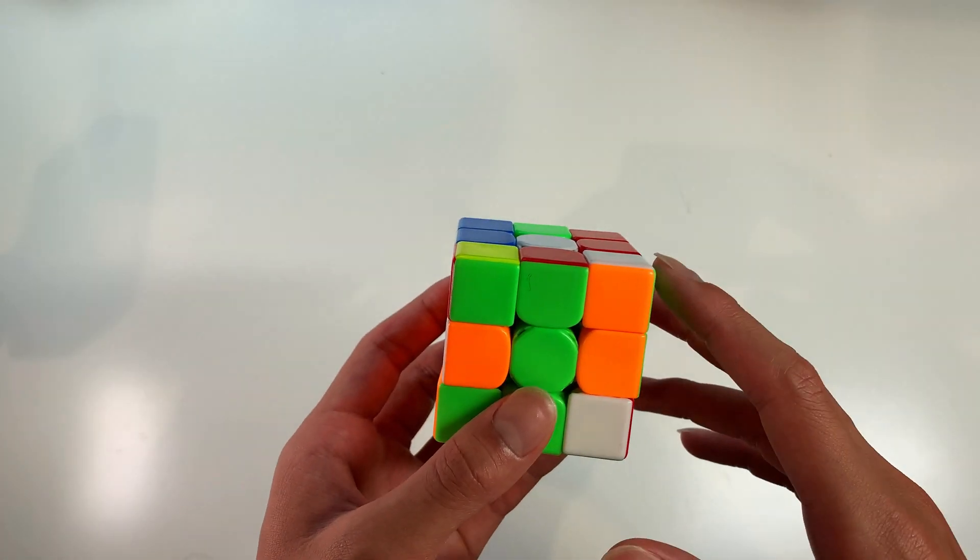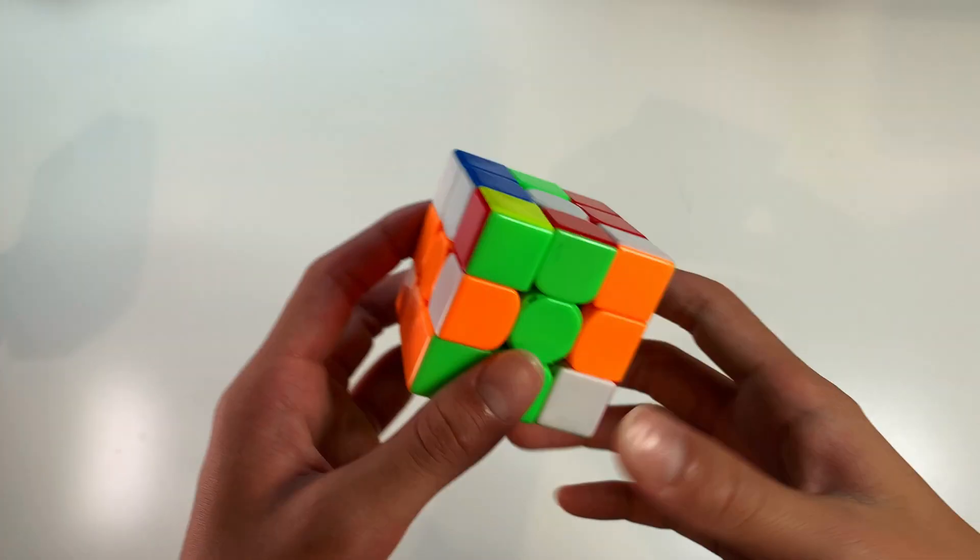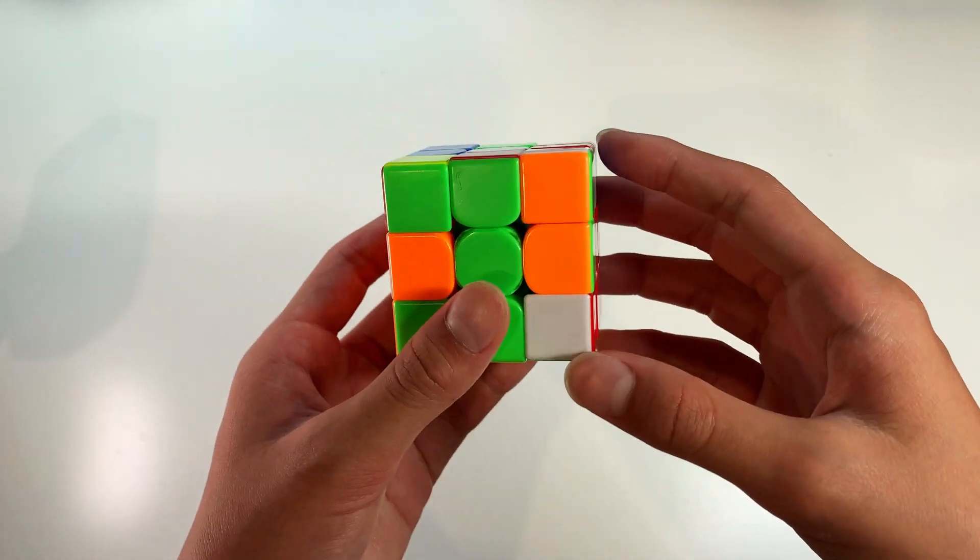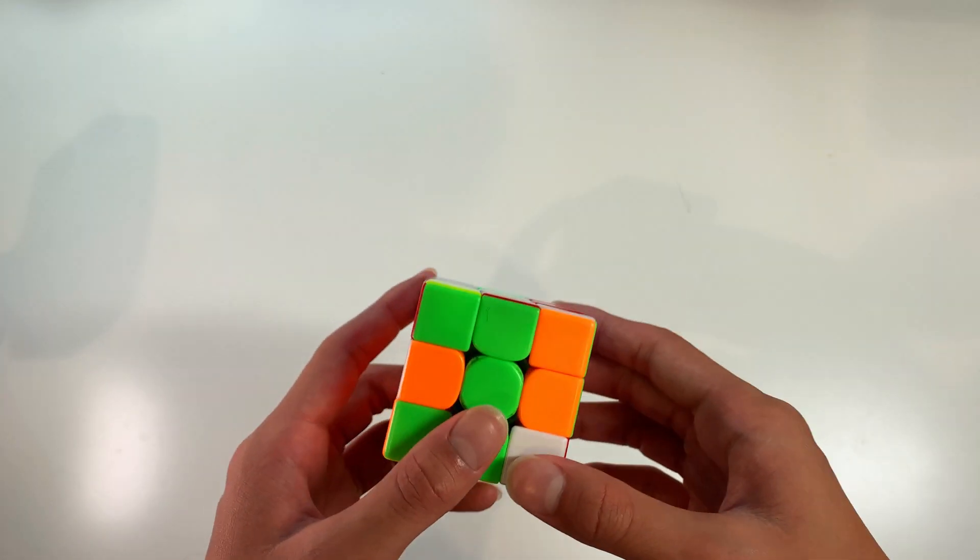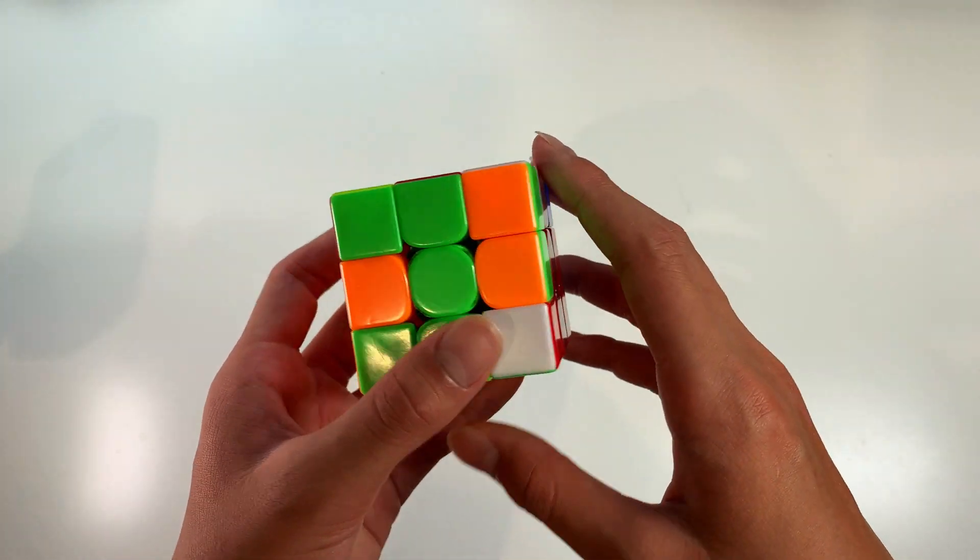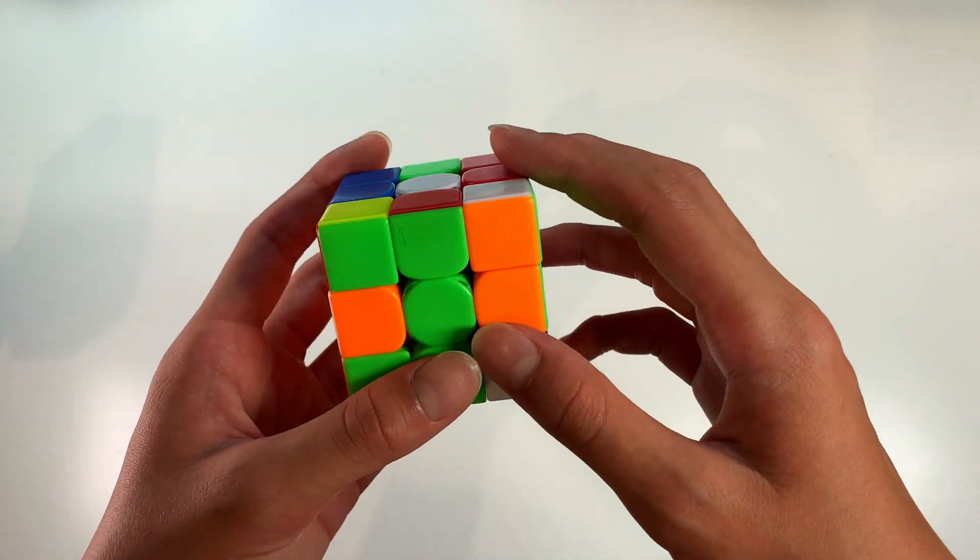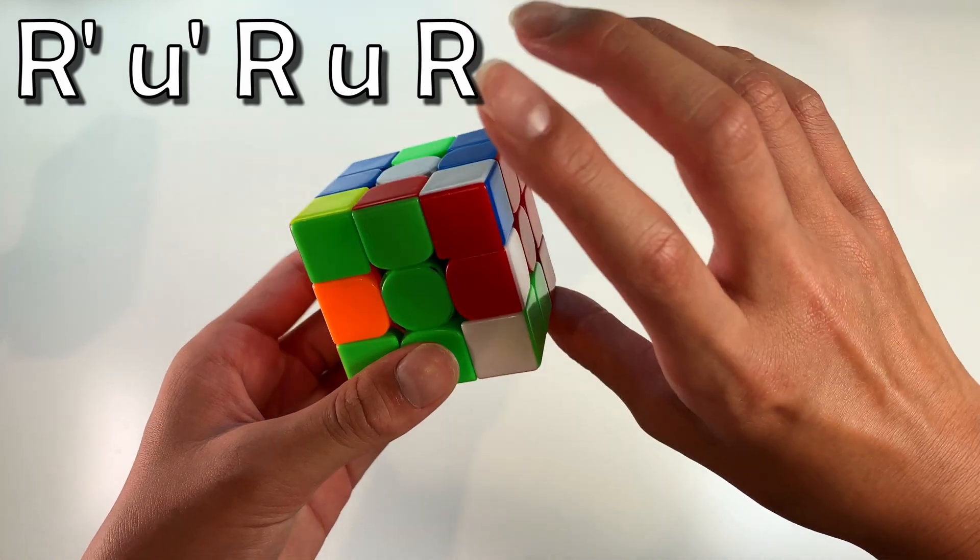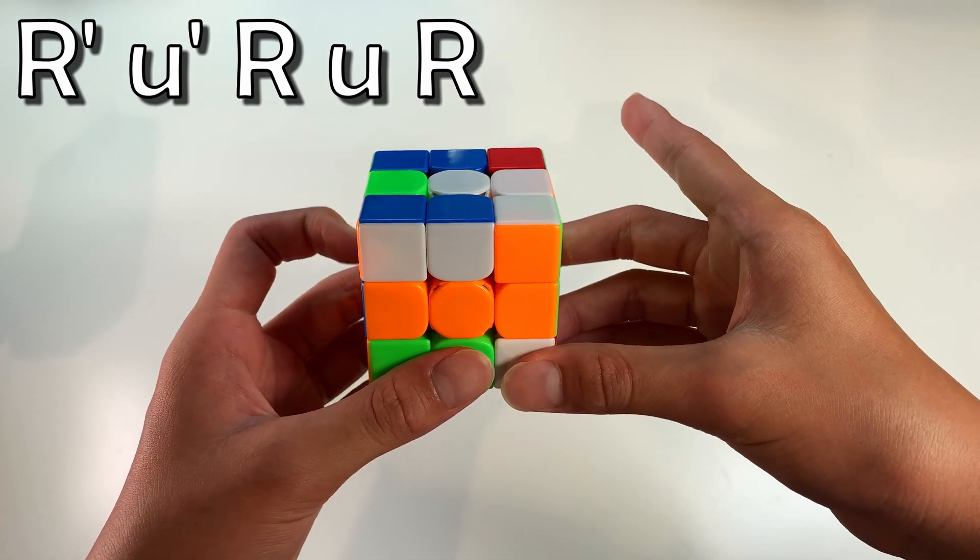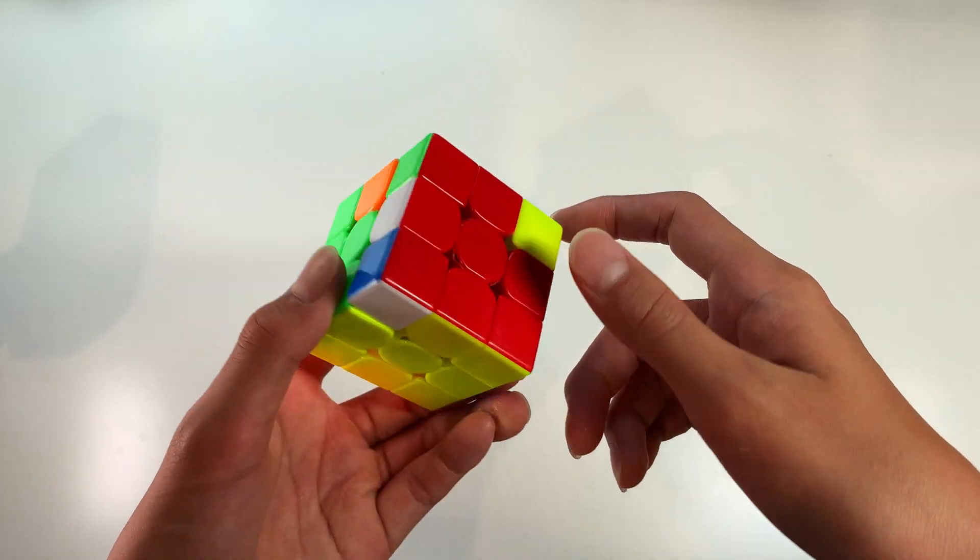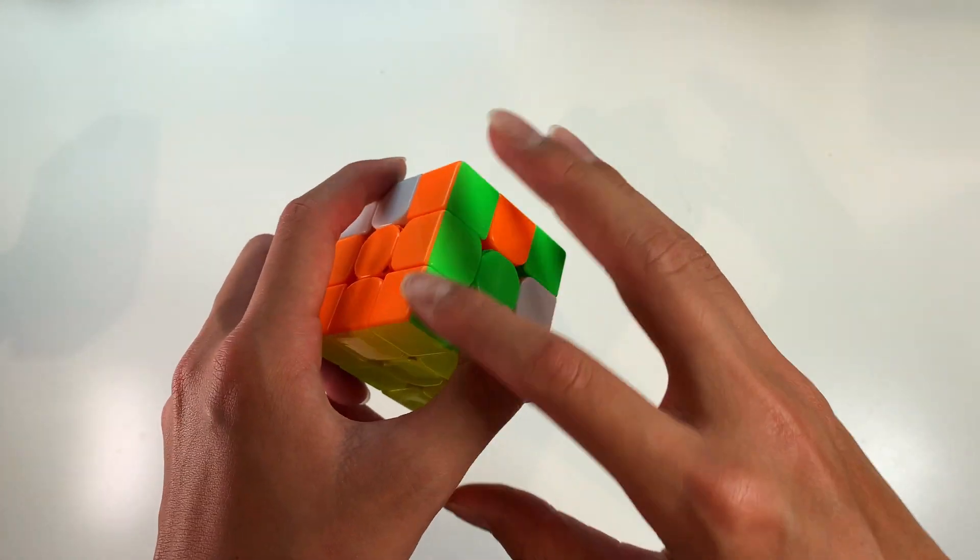That's actually a pretty decent way to do it but it's definitely not the best. One of my favorite ways to do this case is to use R and wide U moves and it only takes five moves so it's a pretty short algorithm. You hold it from the front like this such that the corner is on the left and you can do R', wide U', R, wide U, R and that will preserve the cross and solve this pair.